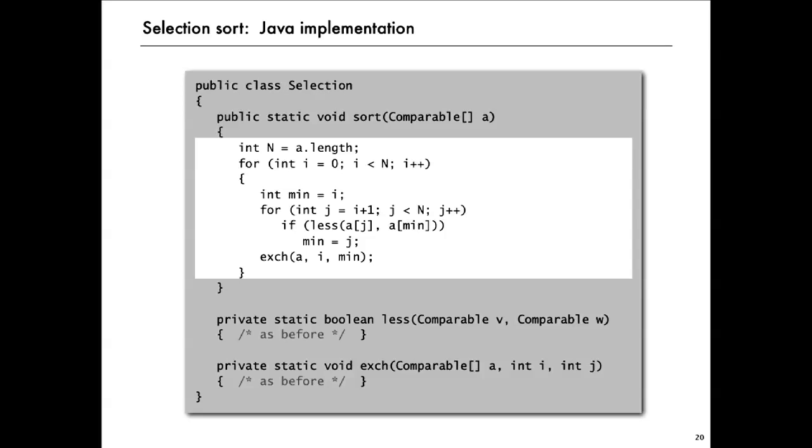We identify the length of the array that's n. Then we have a for loop that goes through every element in the array. We keep a variable min, that is the index of the smallest element to the right of pointer i. We have an inner for loop that for j, if it finds a smaller one, resets min. And then once we've looked at all the elements to the right of i, we exchange the smallest one with i. That's a complete implementation of selection sort.